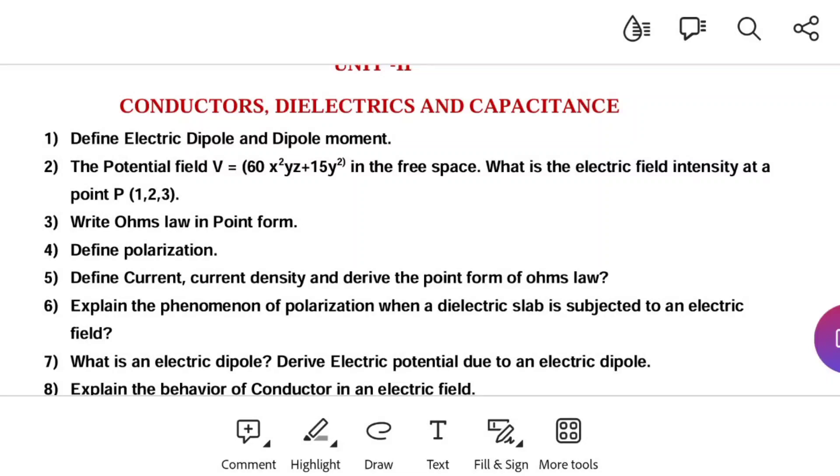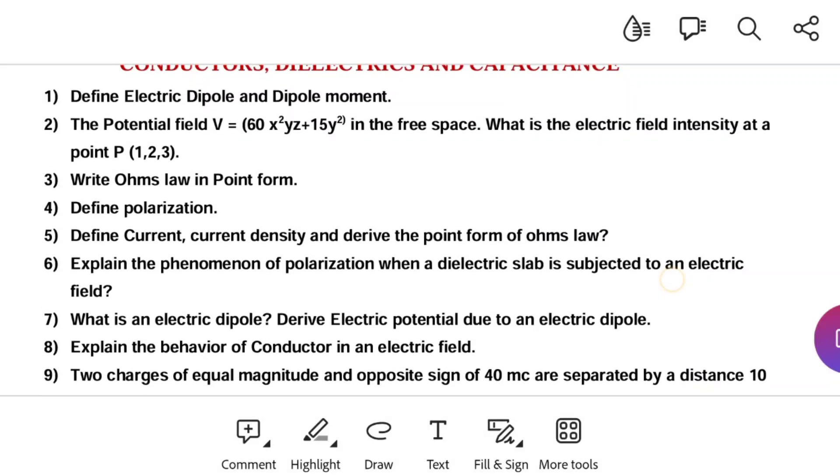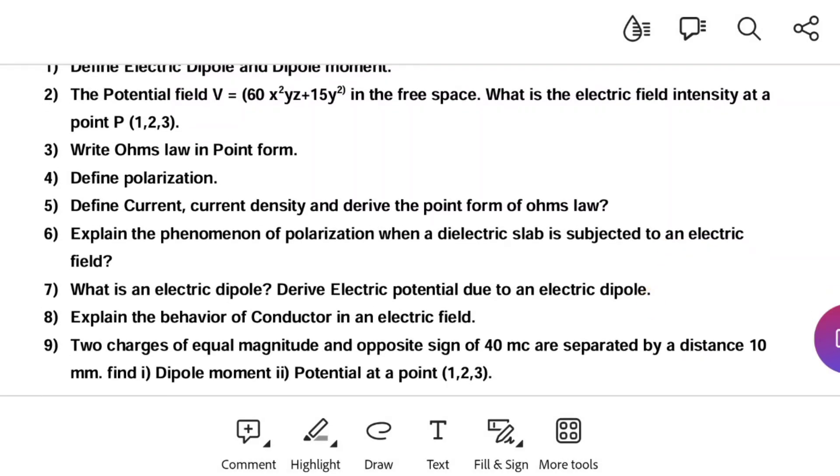If you find that del dot D, del dot P equal to, then you can substitute that. Write Ohm's law in point form. Most important question J = sigma E. Electric field intensity and current density can be represented as related by J = sigma E. Define polarization. Polarization means when dielectric is subjected to electric field then polarization will happen. That is formation of dipoles will happen in dielectric material, then it is called polarization.